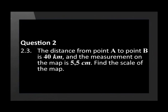The distance from point A to point B is 40 km, and the measurement on the map is 5.5 cm. Find the scale of the map.